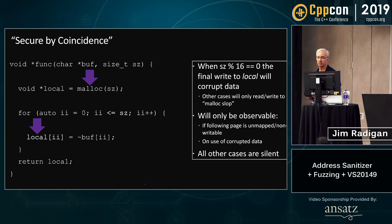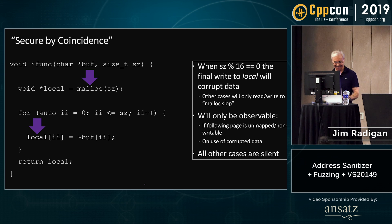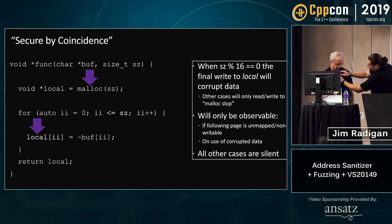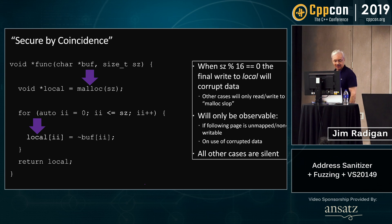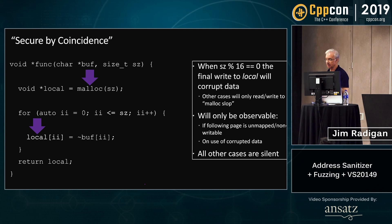What's really great about this is that ASAN will help you with this type of error. The runtime hooks malloc, and what happens is the runtime will hook malloc and the compiler will instrument the store. What's really important is that the combination of code generation and interop with the runtime will catch it immediately before you actually do the store, and give you an exact error message.